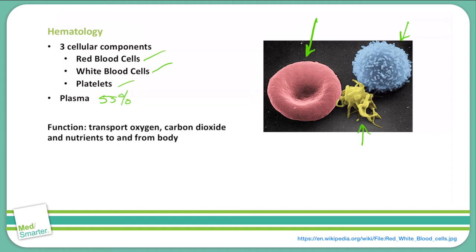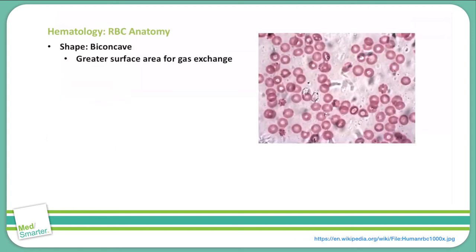The function of the blood is to transport oxygen, carbon dioxide, and nutrients to and from the body. When we're talking about red blood cells specifically, their anatomy shows a shape that is biconcave. This is seen as central pallor in a blood smear — you have the white center with the darker red exterior. What this does is give the red blood cell a greater surface area that allows gas exchange to occur more readily.